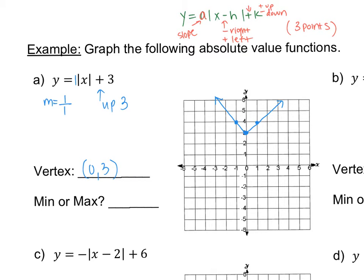notice that this vertex here is the lowest point on this absolute value, on this V. If it's the lowest point, that means it has to be a min. So this is a min.